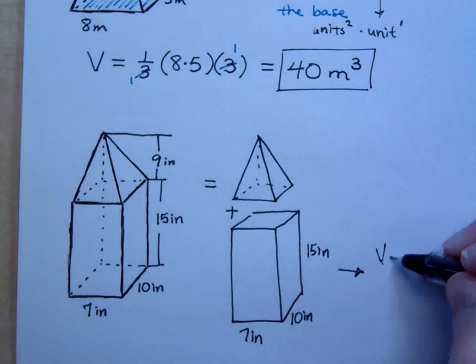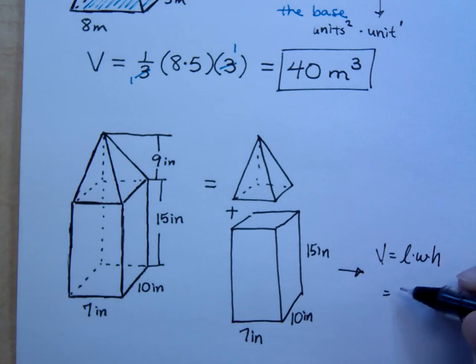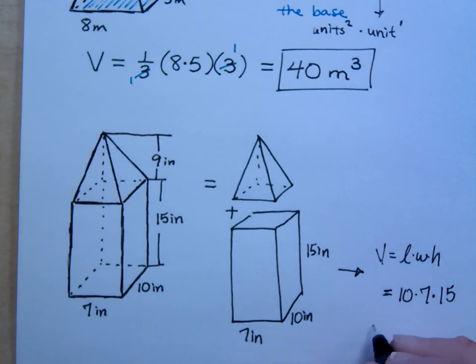So, that would be, let's see, let's write this. Length times width times the height. So, that's going to be 10 times 7 times 15. What two numbers would you multiply first here? You could do 7 times 10, but I'm going to save the 10 for the last, because 10 is going to be easy to multiply times. Because to multiply times 10, we just have to do what? Add a 0. What's 7 times 15? It's 105, right?